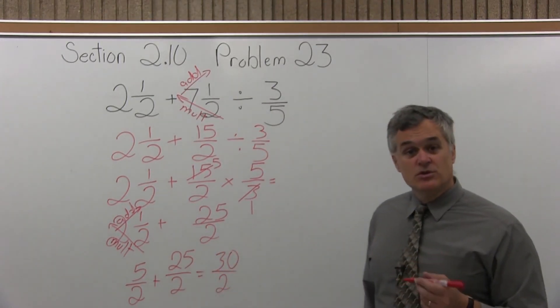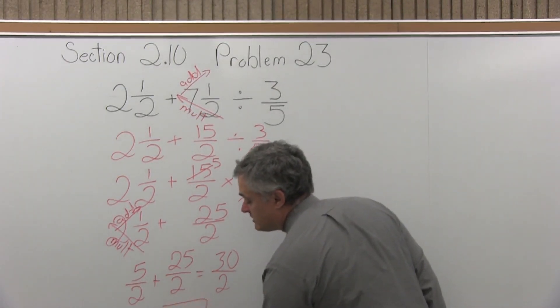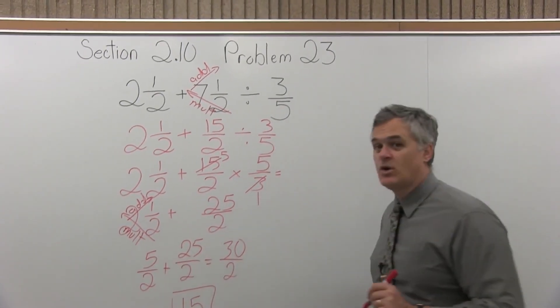And that can be reduced. Thirty over two reduces very nicely to fifteen. So the final answer is fifteen, a whole number.